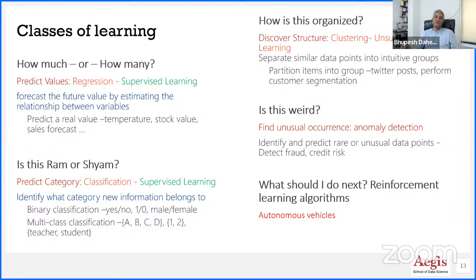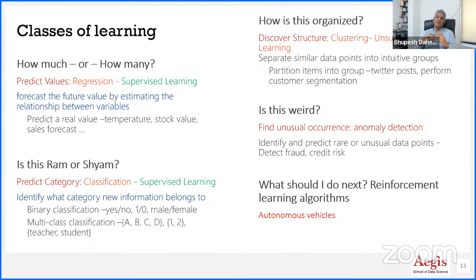The next kind of question is 'what should I do next?' — that's where reinforcement learning is used. It's typically used in gaming, driverless cars, autonomous vehicles, and robots. Reinforcement learning works on a reward-and-penalty mechanism. If you tell a child to bring water and offer a chocolate as reward, that reward encourages the child. The same concept is used in reinforcement learning, and models can learn pretty fast.